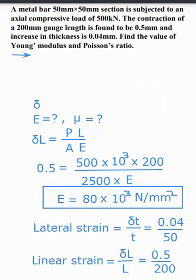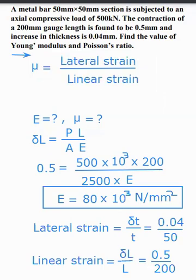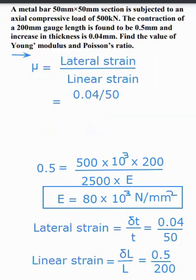Poisson's ratio, mu is equal to lateral strain divided by linear strain. Lateral strain it is 0.04 divided by 50, divided by linear strain it is 0.5 divided by 200. So mu is equal to it will be 0.32.